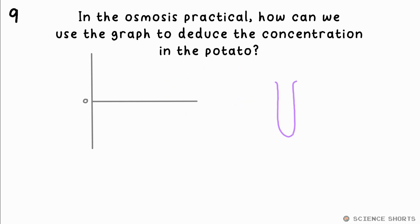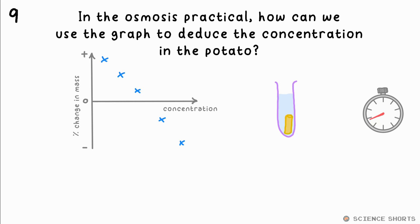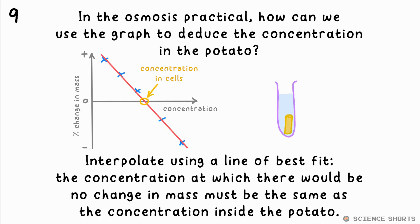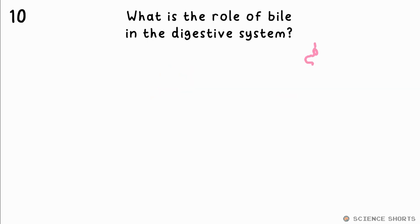Question 9. In the osmosis practical, how do you find the concentration of sugar inside the potato from the graph? We interpolate using a line of best fit. Where it crosses the x-axis, that's the concentration at which no osmosis would occur, showing that this concentration is therefore the same as that inside the potato cells.